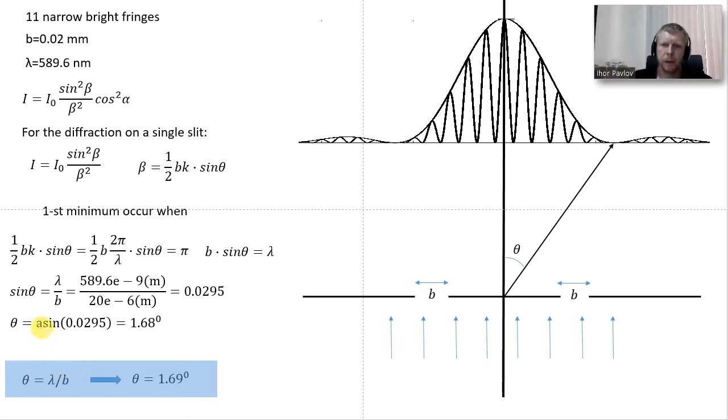Alternatively, if we use the small angle approximation, theta equals lambda over b, we would get practically almost the same result, theta equals 1.69. Within this problem, this small angle approximation would be fine.